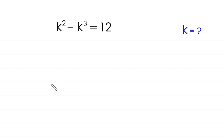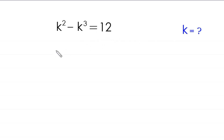Hello everyone, welcome to how to solve this very nice algebra equation. k squared minus k cubed is equal to 12. Our job is to find all possible values of k. So let's start. First we move this 12 to the left hand side, so this will become k squared minus k cubed minus 12 is equal to zero.